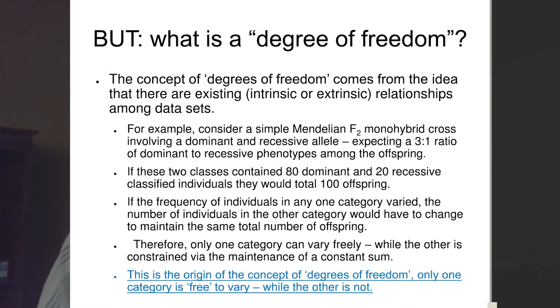Another very difficult concept is the idea of degrees of freedom. It is an extremely difficult topic in statistics. In our case, it has a very simple meaning and derivation, but its actual meaning in statistics is fairly difficult. The idea is based on the question of whether or not there are existing relationships between or among data sets, categories of data. Are these relationships intrinsic or extrinsic?